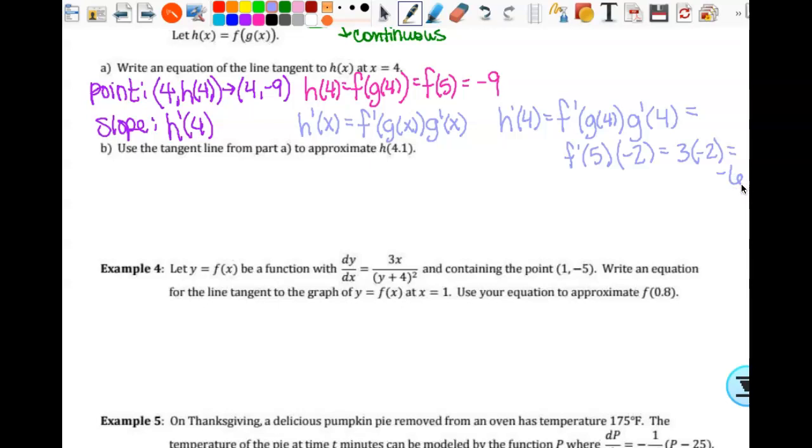So g(4) is 5, so f'(5) times g'(4) is -2. f'(5) is 3 times -2. I got -6. One thing you want to be careful in doing - when I get here, am I allowed to multiply -2 times 5? No, this is all something different, right? So don't go making a math error. So then that means that h'(4) is equal to -6.